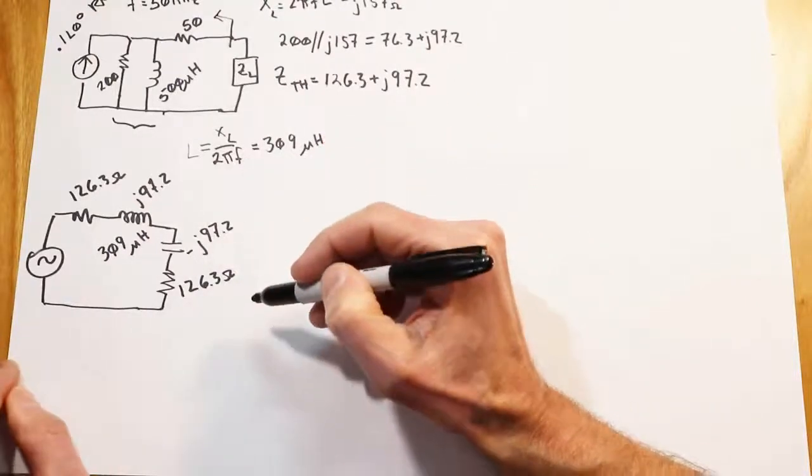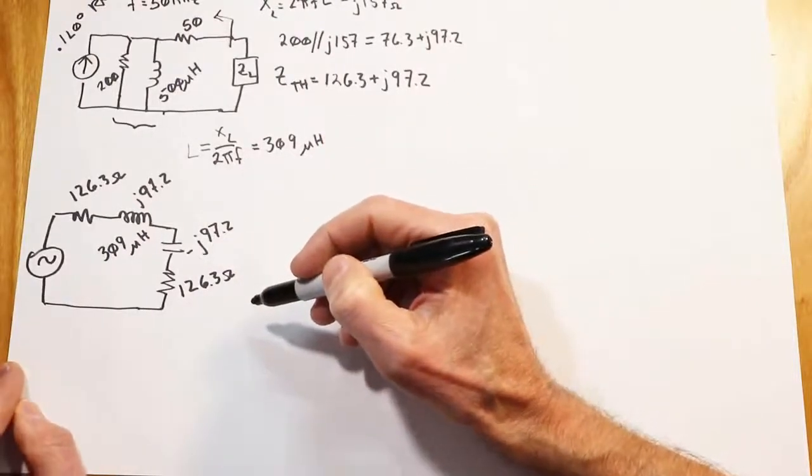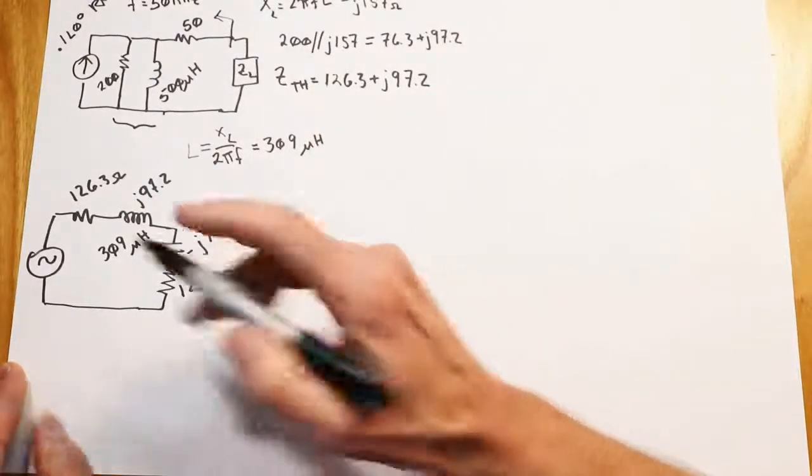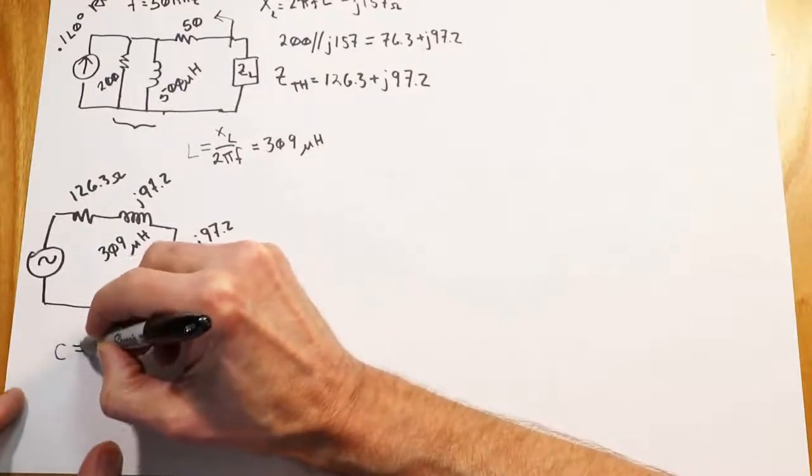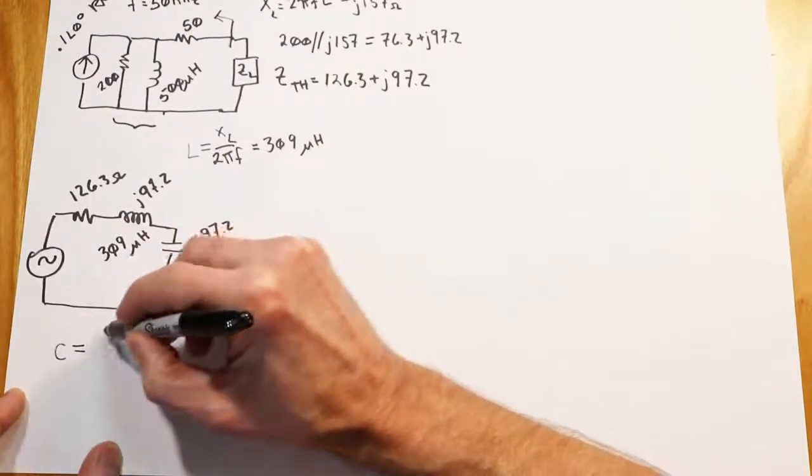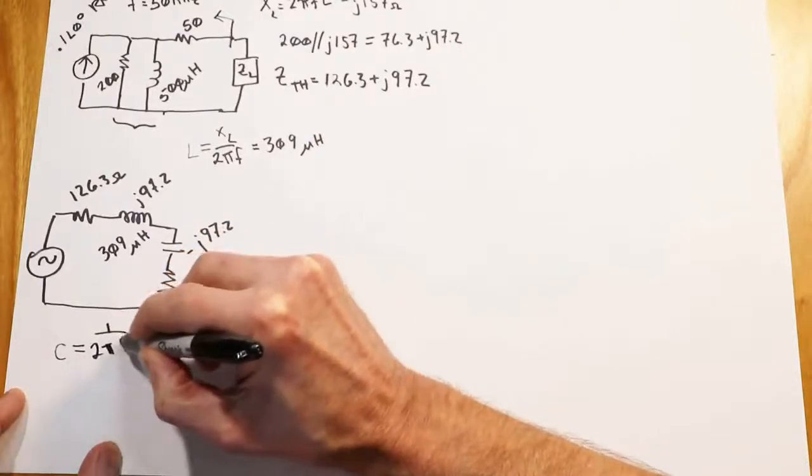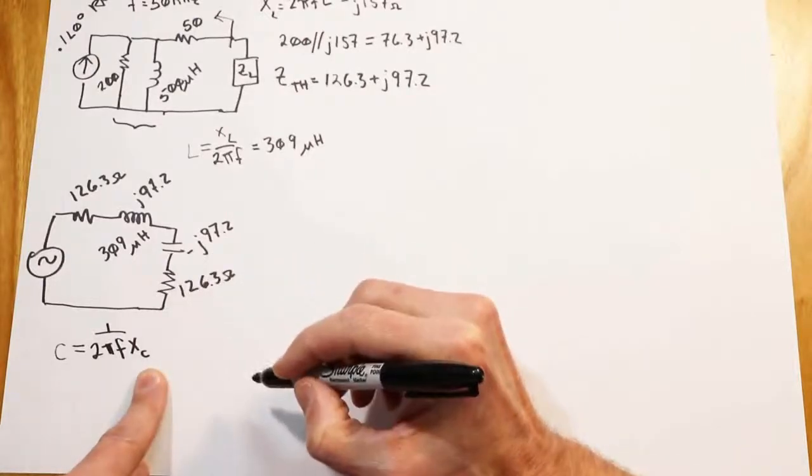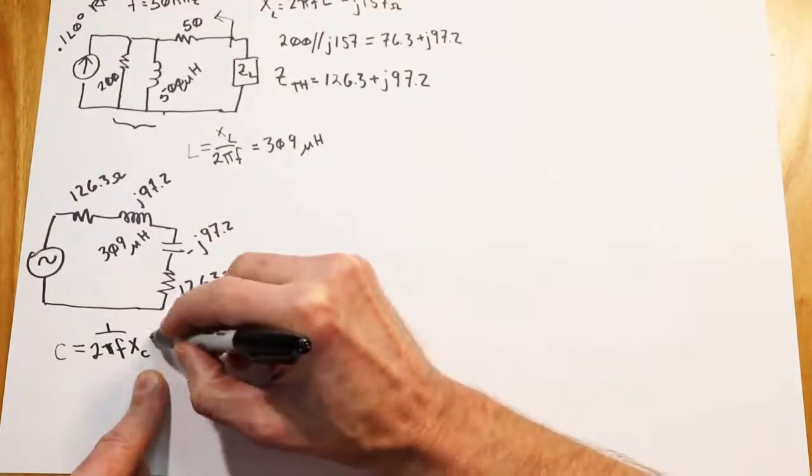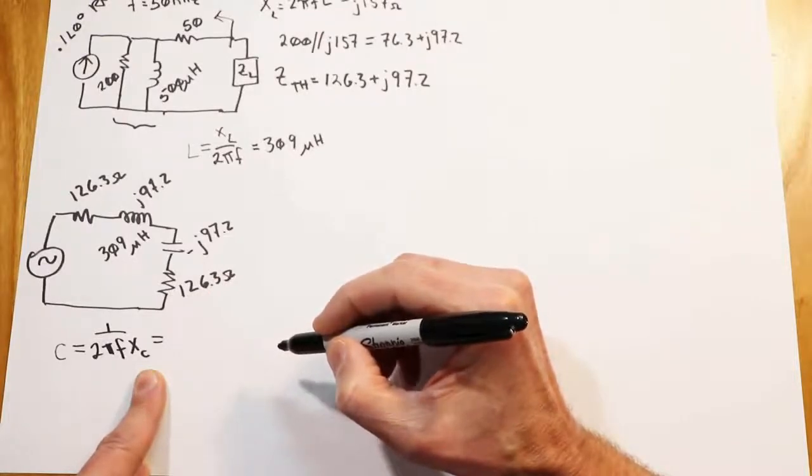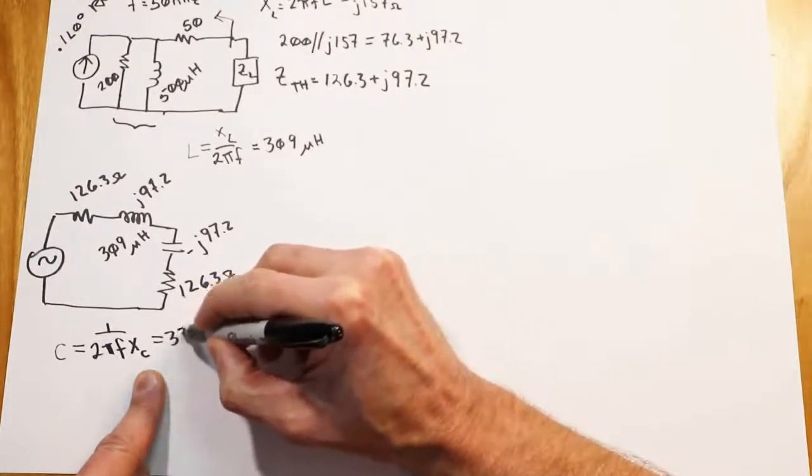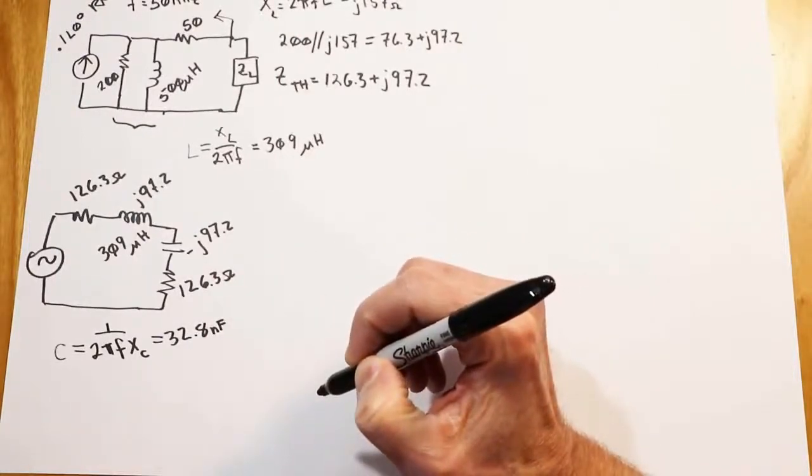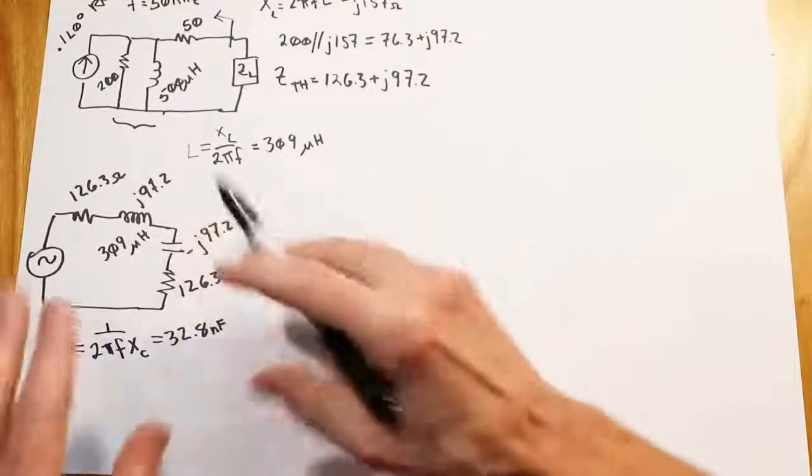I probably would like to know what the 97.2, the minus J is there as a capacitor. So we'll do the same kind of thing we did over here, utilizing the capacitive reactance formula. So we could say, C would have to equal 1 over 2πF times X sub C. So we'll throw in 50 kilohertz for this. We'll throw in the minus 97.2. And that will work out to 32.8 nanofarads. So far so good.